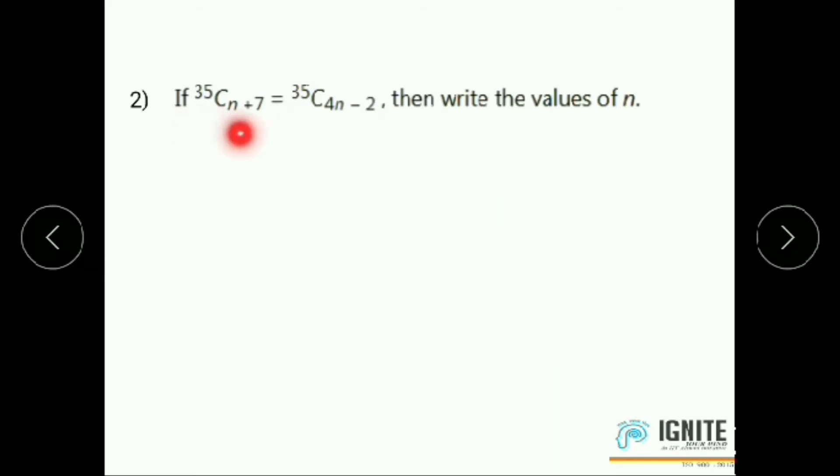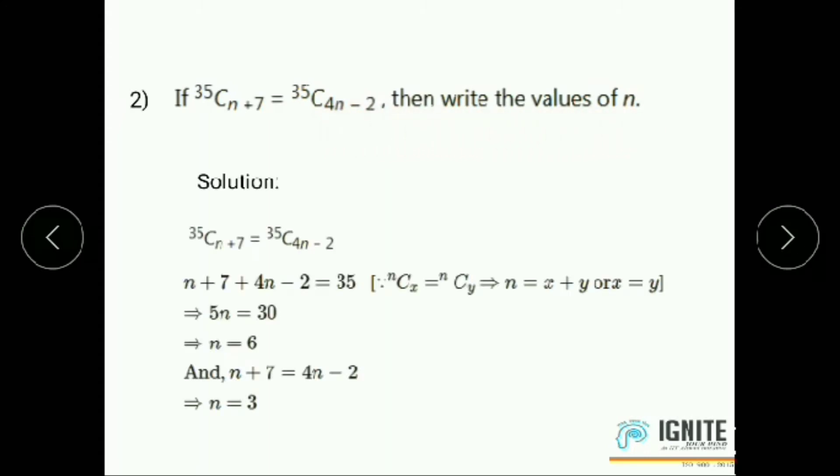Next question, if 35C(n+7) equals 35C(4n-2) then write the value of n. Given that 35C(n+7) equals 35C(4n-2). But using this property NCx equals NCy implies N equals x plus y or x equals y. N equals x plus y, that means 35 equals n plus 7 plus 4n minus 2. Then we get 5n equals 30. And n plus 7 equals 4n minus 2. Therefore, then we get n equals 3. So the values of n: 6 comma 3.